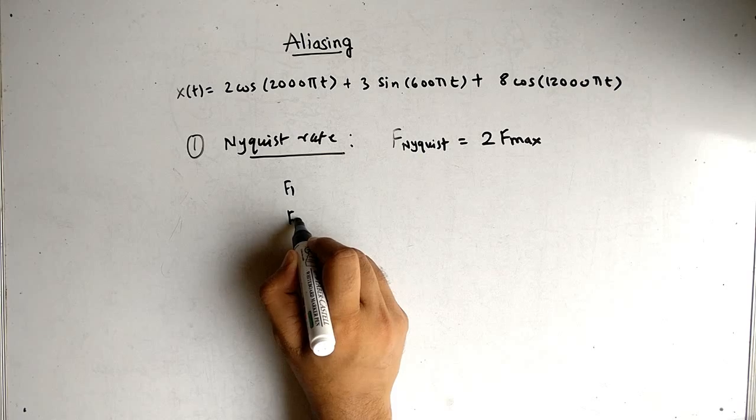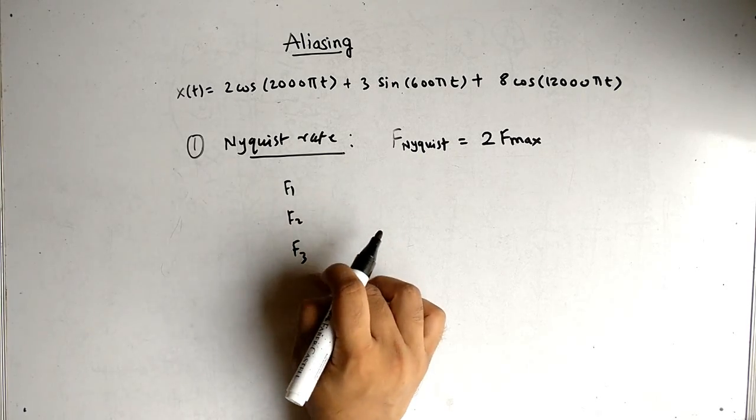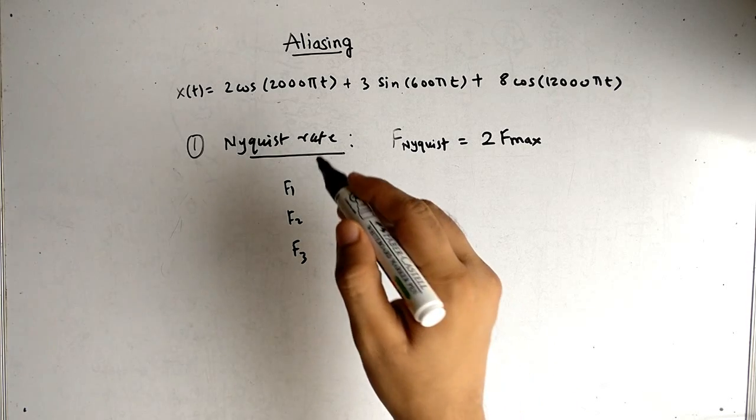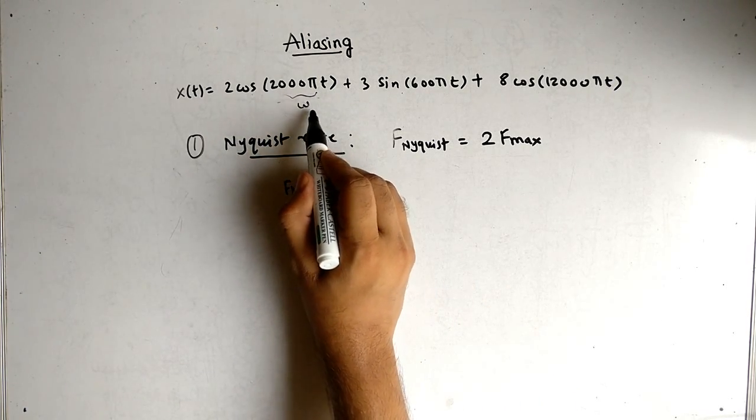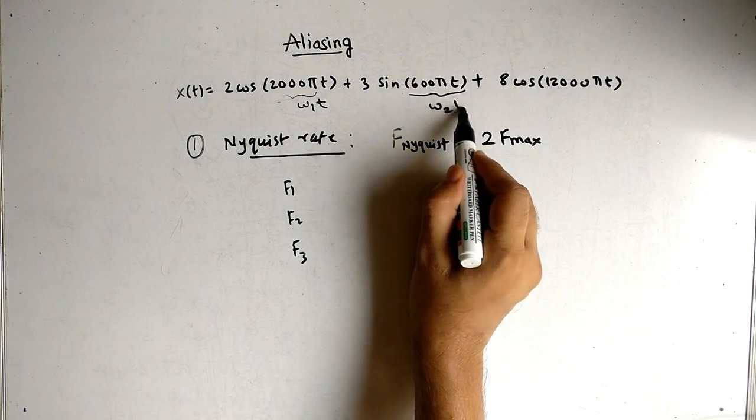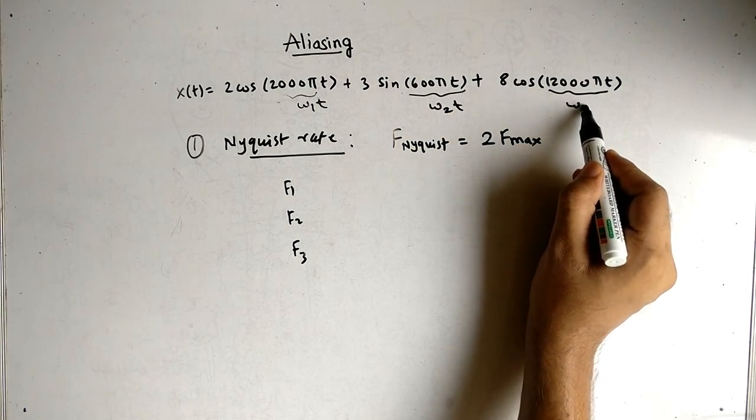We have to find f1, f2 and f3. Why three frequencies? Because we have three terms. Let's see how we can find that. This term is omega 1 t, this term is omega 2 t, this term is omega 3 t.